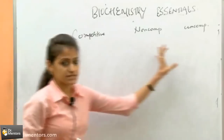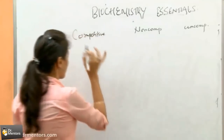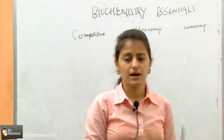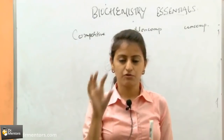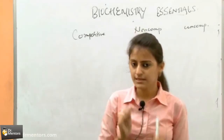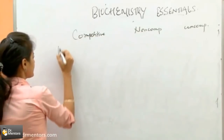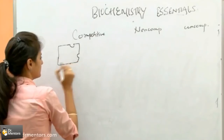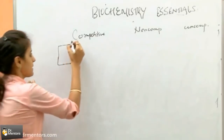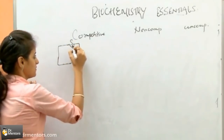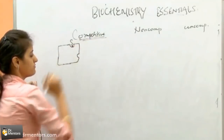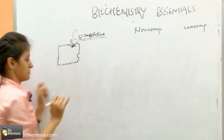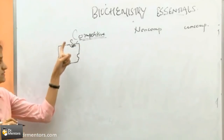Now we see what the three types of enzyme inhibition are. Competitive means, as the name says, it competes with the substrate for the site to attach to the enzyme. So if this is an enzyme, substrate binds here. In competitive inhibition, the inhibitor will also bind here at the same site as the substrate.